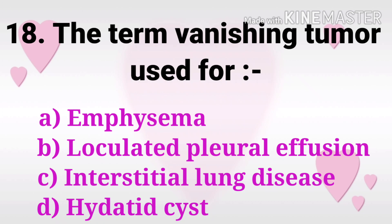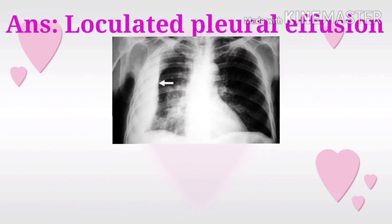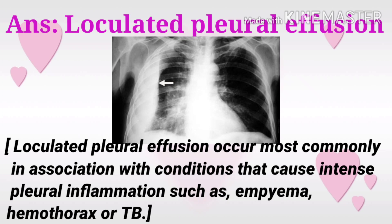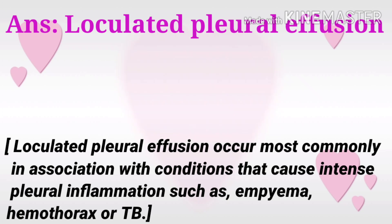Question 18: The term 'vanishing tumour' is used for? The options are emphysema, loculated pleural effusion, interstitial lung disease, and hydatid cyst. The answer is loculated pleural effusion. It occurs most commonly in association with conditions that cause intense pleural inflammation such as empyema, hemothorax, or TB.